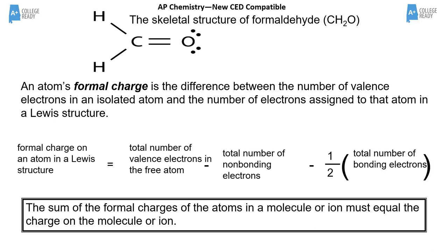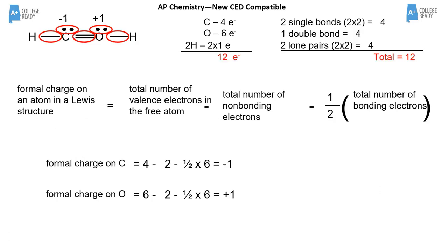All formal charges must add up to zero, or equal the charge of the polyatomic ion. For example, in a COH molecule, the math gives carbon a formal charge of −1 and oxygen a formal charge of +1 — they add to zero. But the rule is: the most electronegative element should carry the negative formal charge. So if oxygen ends up positive and carbon ends up negative, that's a problem.